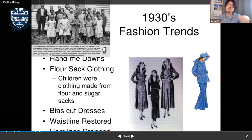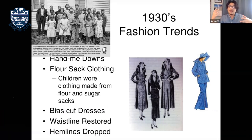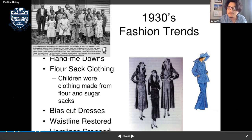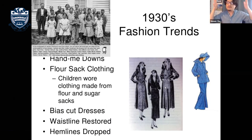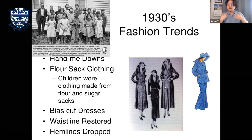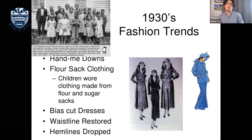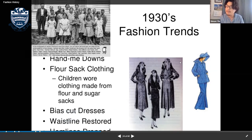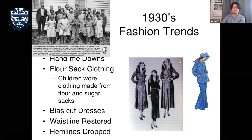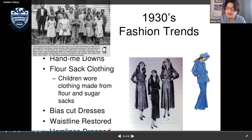For those better off, there were bias-cut dresses with nicer cuts, and the waistline was restored. In the 1920s the silhouette was tubular — a rectangular shape without visible waist. In the 1930s the waistline came back, and hemlines dropped again, going back down toward the ankle.